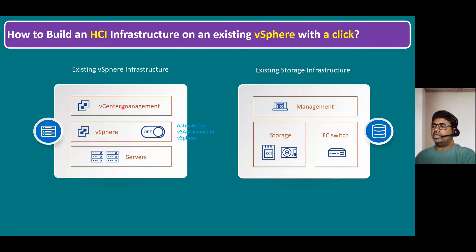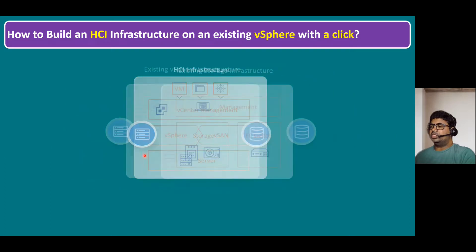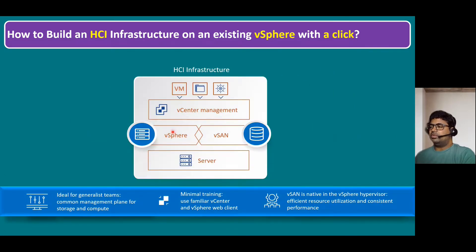When you activate the vSAN license, within our vCenter Server you can create multiple clusters. If you select any cluster and right-click, we have options for HA, DRS, and also an option to enable virtual SAN. When you enable virtual SAN with a single click, whatever the hard drive storage is available in our servers, it will combine all the disk groups and make it one single datastore. So the server and storage are combined — vSphere is now configured with virtual SAN enabled at the cluster level.